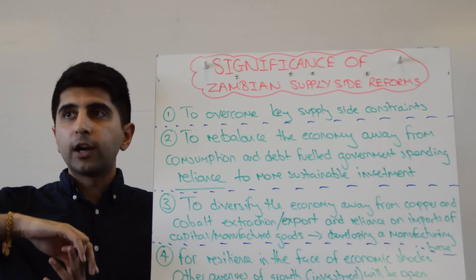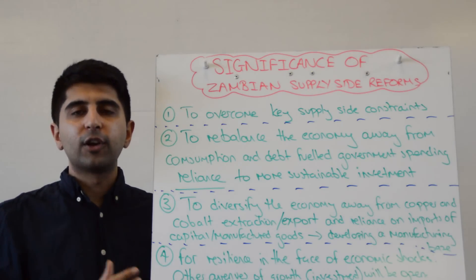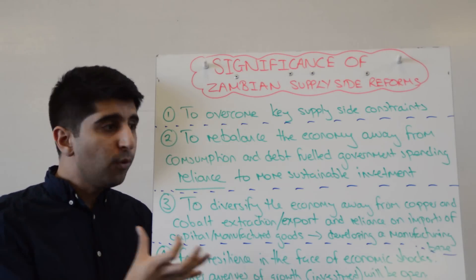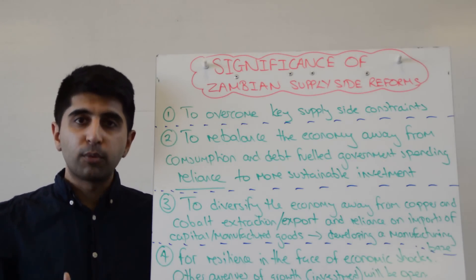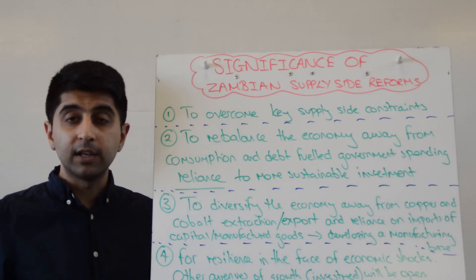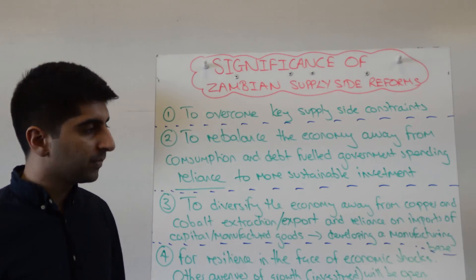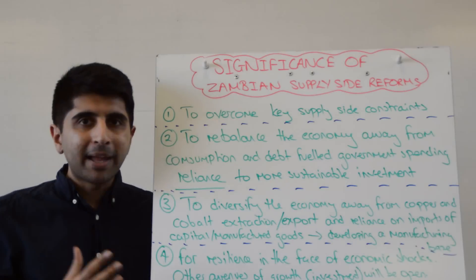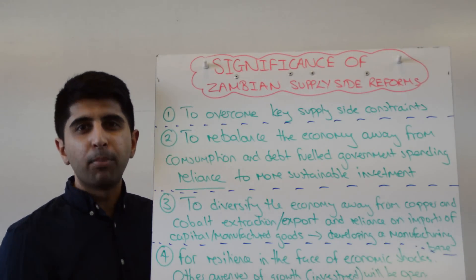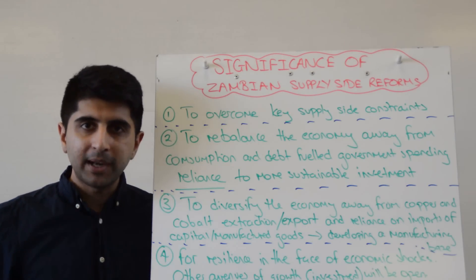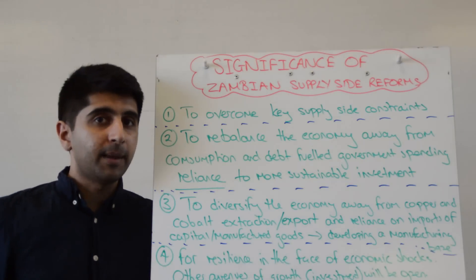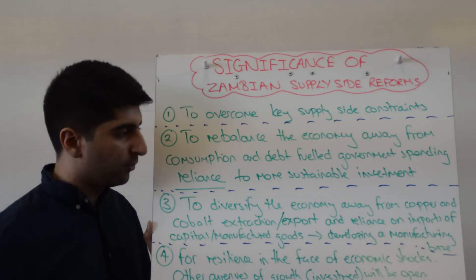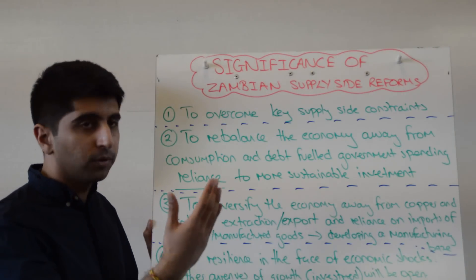Maybe a global recession or a global crisis like we're seeing right now, which reduces demand for commodities like copper and cobalt — and therefore what if the prices for these commodities fall? Then it's going to impact Zambia significantly. If Zambia only exports these goods, export revenues are going to drop significantly and growth rates could fall, leading to recession, like Zambia is suffering from right now. But if these supply-side reforms — especially those targeting investment — are successful, then maybe a manufacturing base could be promoted. Goods that Zambia imports could now be made in Zambia, reducing import expenditure and potentially increasing X minus M in the AD equation, allowing for more stable and sustainable growth. This would reduce the import dependency of the Zambian economy for capital and manufactured goods.